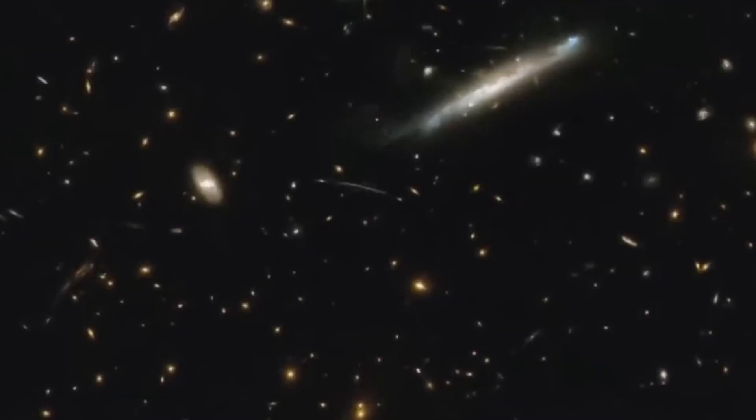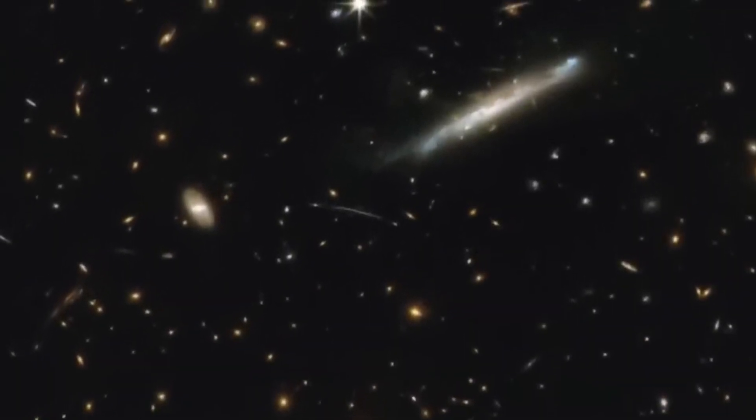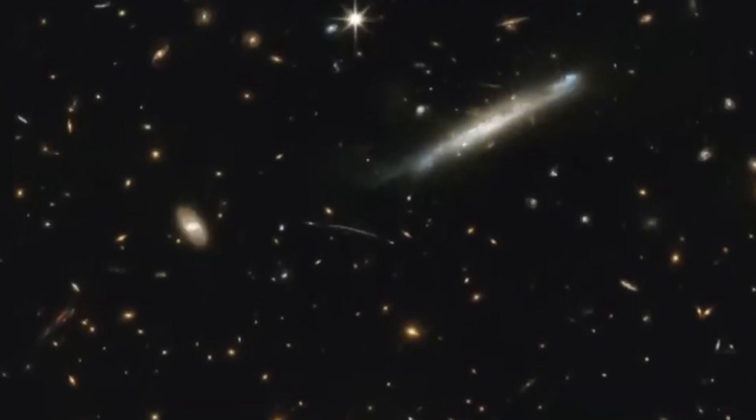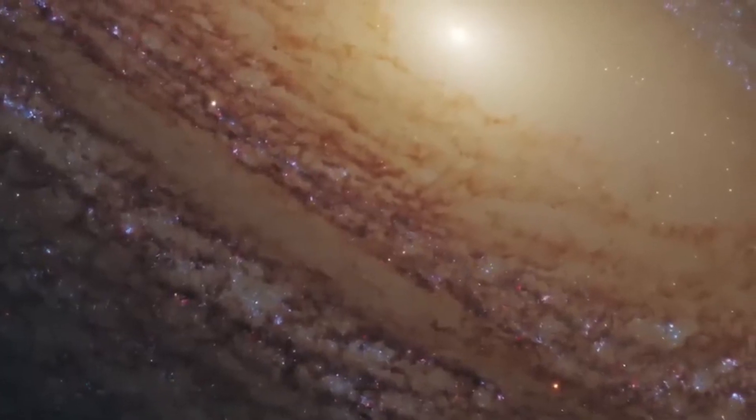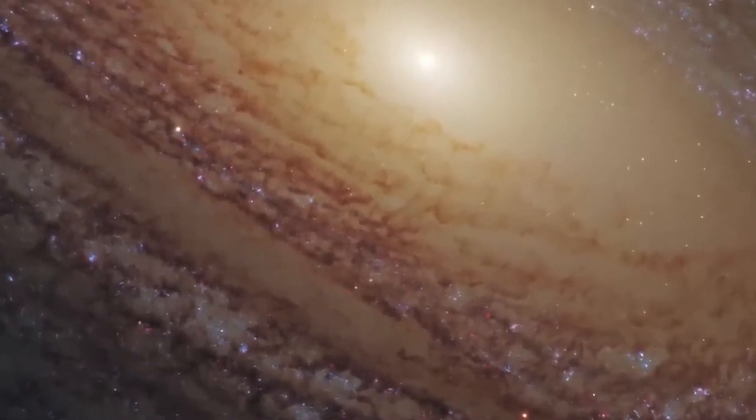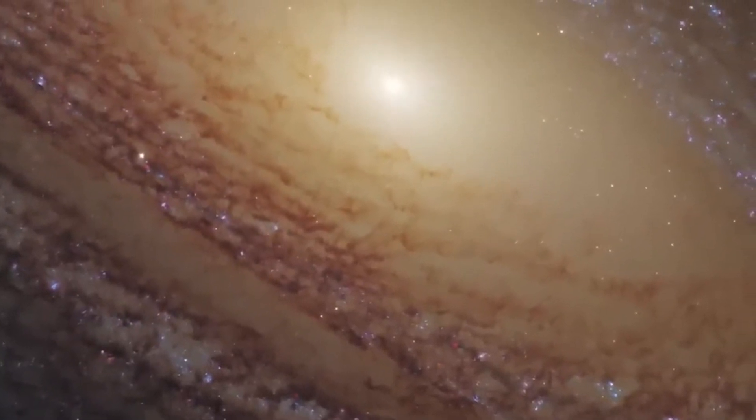Now that we know a little more about how each telescope differs, let's have a look at the images. Straight away, you can see how the greater capabilities of Webb have allowed for a much more detailed view of the universe. Each photo is of the galaxy cluster called SMACS 0723, which is located 4.6 billion light-years away.